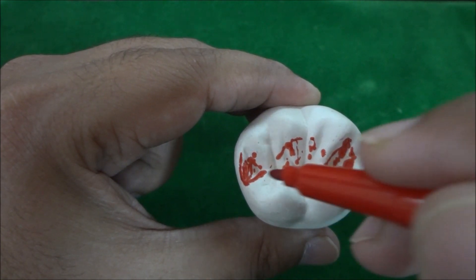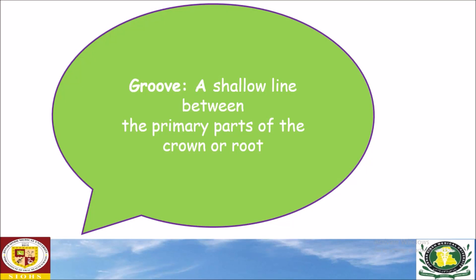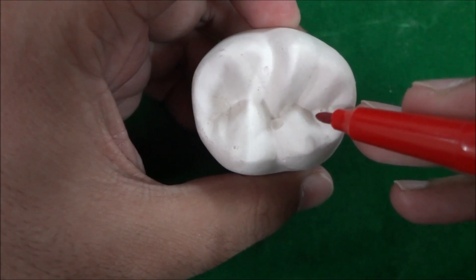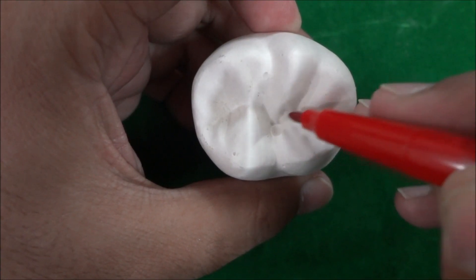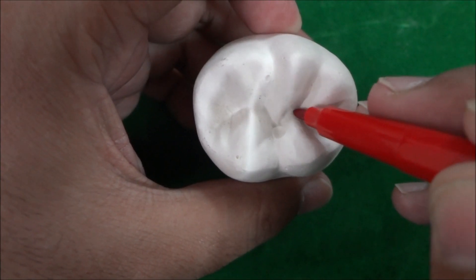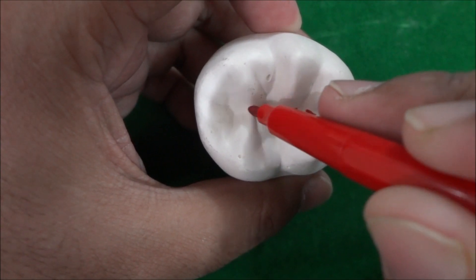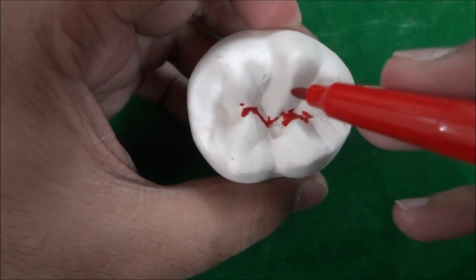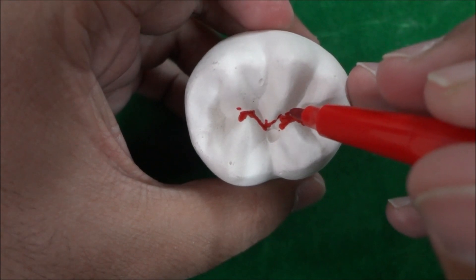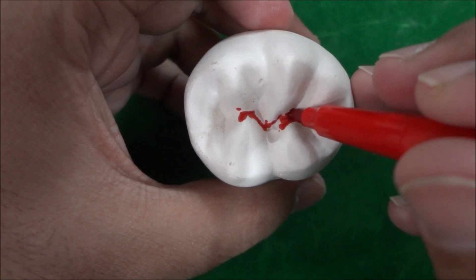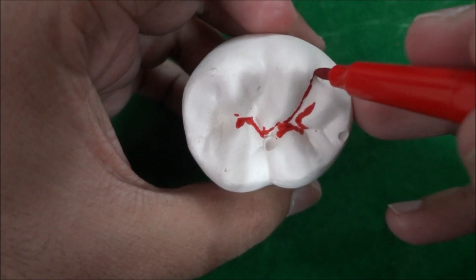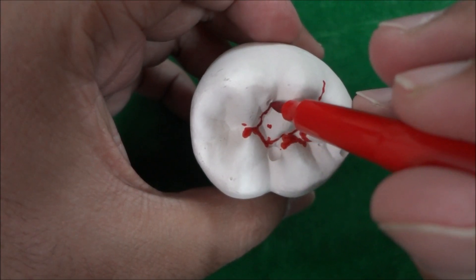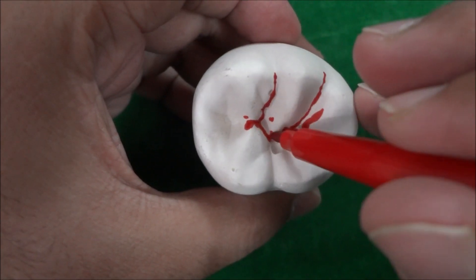A groove is a shallow line between the primary parts of the crown. In this molar, at the bottom of the sulcus you can see a developmental groove known as the central developmental groove. From the central developmental groove, other grooves emerge — for example, two buccal grooves and a lingual groove.